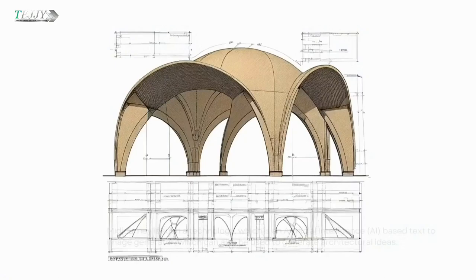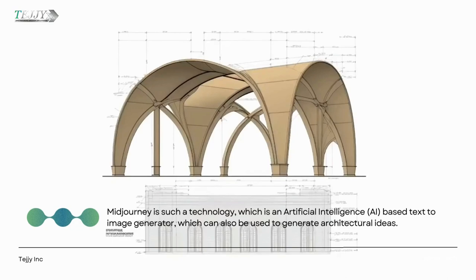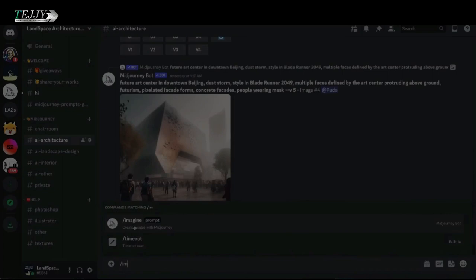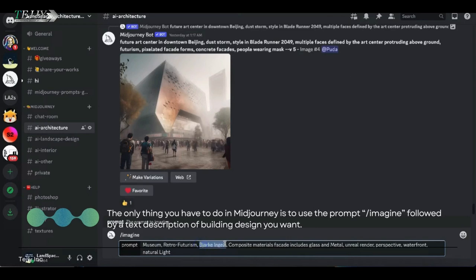Midjourney is such a technology, which is an artificial intelligence-based text-to-image generator, which can also be used to generate architectural ideas. The only thing you have to do in Midjourney is to use the prompt — forward slash imagine — followed by a text description of the building design you want.